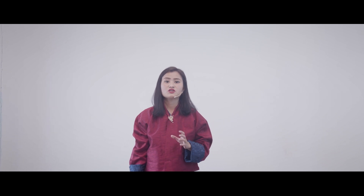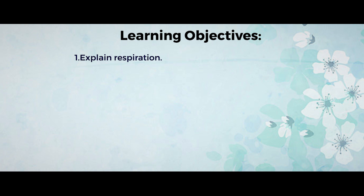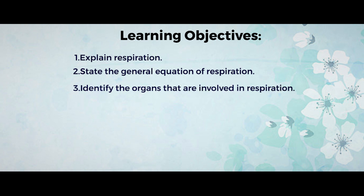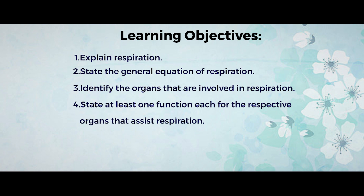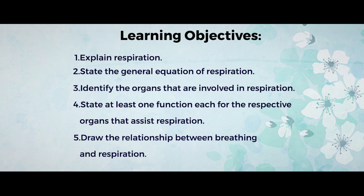Before going on to the respiratory system, let me tell you what you'll be learning today. First, you should know how to explain respiration in your own words. Second, there's a general equation for respiration that you should be able to write. Third, you should be able to identify the organs involved in respiration. Fourth, you should talk about the organs which help you undergo respiration. Fifth, you should be able to draw the relationship between respiration and breathing.